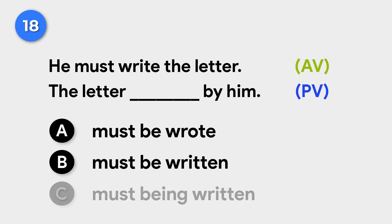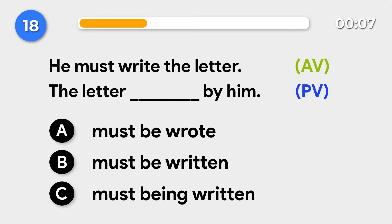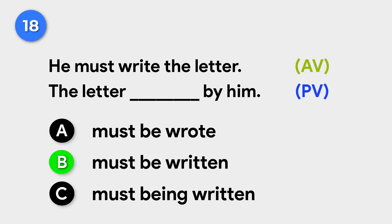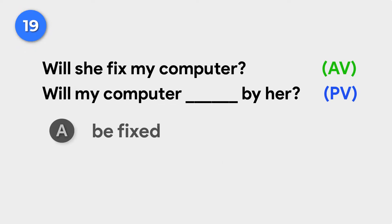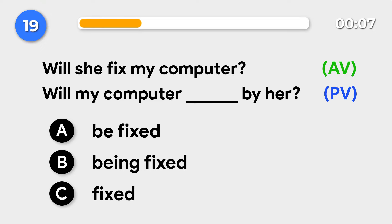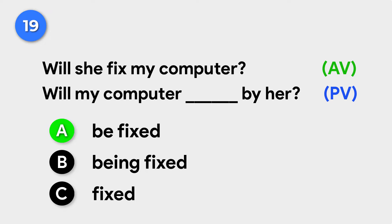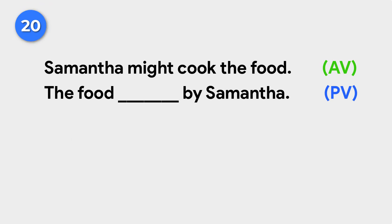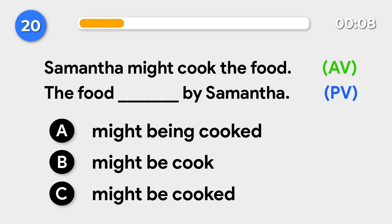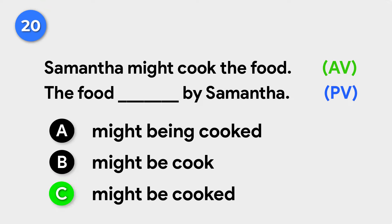He must write the letter. → The letter must be written by him. Will she fix my computer? → Will my computer be fixed by her? Samantha might cook the food. → The food might be cooked by Samantha.